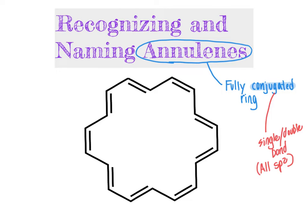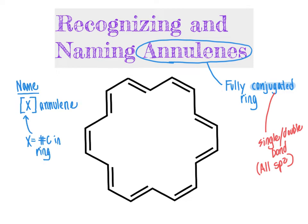So that is how you recognize and describe a molecule as an annulene: it needs to have a fully conjugated ring. Now, to name an annulene, what we do is count the number of carbon atoms in the ring and tag the term annulene onto the end of it. So you name it as [x]annulene, where x in brackets equals the number of carbon atoms in the ring. The ring has to be fully conjugated because by definition, annulene means the ring is a full system of sp2 carbons.